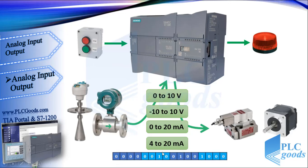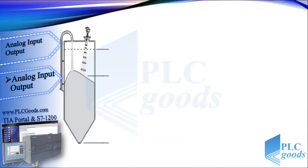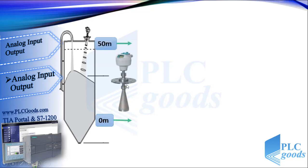Let's see an example. Suppose we have a level transmitter to measure the level of a substance such as wheat. This transmitter can be tuned to generate a voltage of 0 to 10 volt corresponding to 0 to 50 meters.